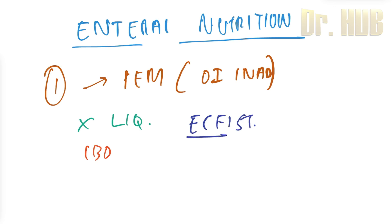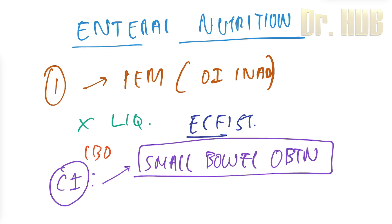What are the contraindications? The contraindication is small bowel obstruction or ileus, severe diarrhea, proximal small intestine fistula, and severe pancreatitis as well. This can be due to the stimulation of pancreatic enzyme release.